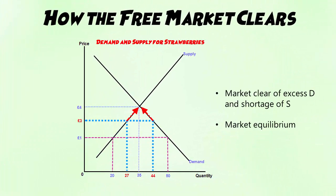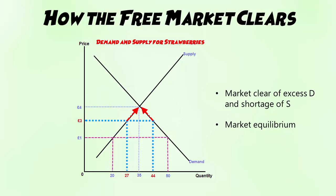If this process continues, we will eventually hit the free market equilibrium price. We say that the market is clear of any excess demand and any shortage of supply, because at that given price of £4, demand equals supply. The free market is clear of any disequilibrium, excess demand, and shortage of supply.